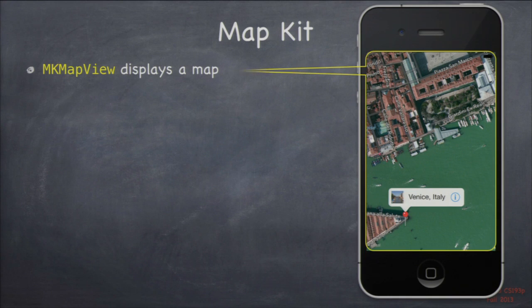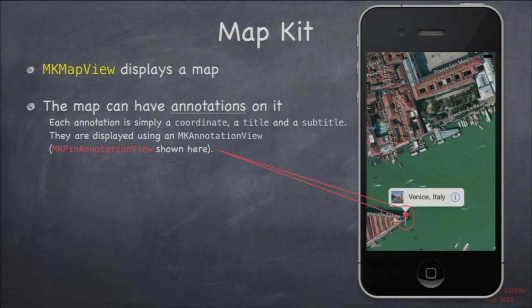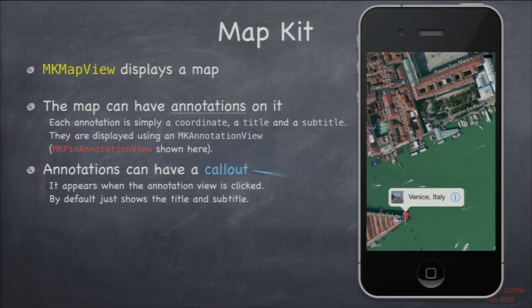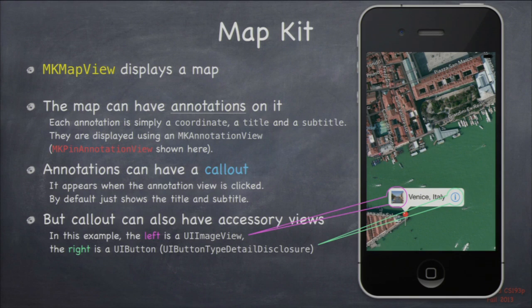Inside of the map view, you have these little pins — these are called annotation views. You can customize this; you can subclass annotation view to make it not look like a pin. These annotation views are responsible for showing someplace in the world. They have a pin, but they also have a little callout. If you click on them, you see that little white bar. That callout can have a title, subtitle, and left and right accessory views. This one has a left accessory view which is an image view, and a right accessory view which is a little button you can click on.